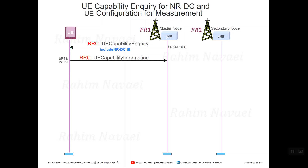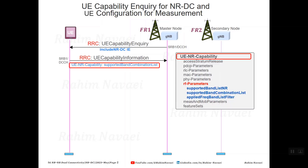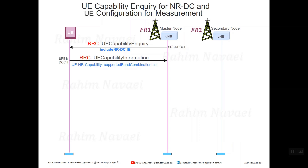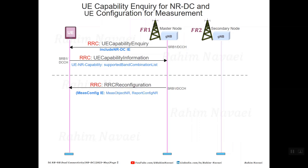The device sends back a response via the UE capability information message to the gNB. The device includes the supported band combination list in the UE NR capability, which is necessary for NR dual connectivity configuration. To determine whether the device has suitable coverage for an FR2 cell to set up NR dual connectivity, the master node sets up an A4 measurement in the device via an RRC reconfiguration message.